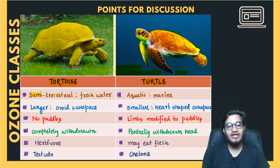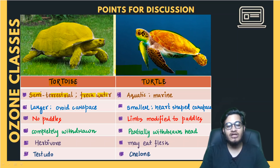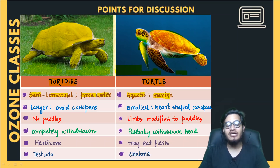The tortoise is semi-terrestrial — it can be present in aquatic habitats, but its first priority is always land. It can also be found in freshwater. The turtle, however, is completely aquatic and you will mostly find it in saltwater. That is the difference on the basis of their habitat.